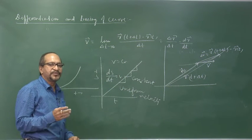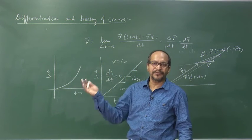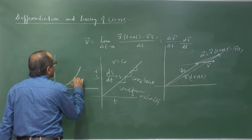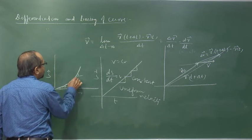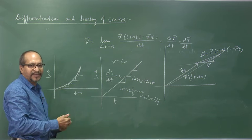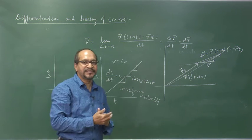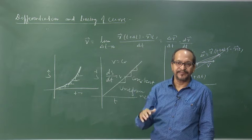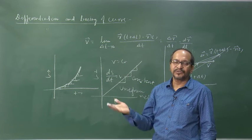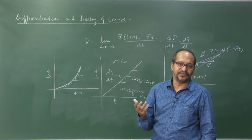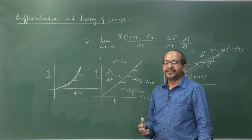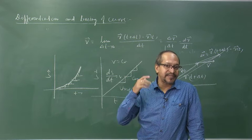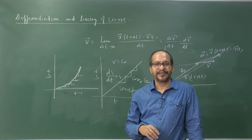If velocity is changing, the slope of the displacement-time graph also changes. Here theta increases, meaning the slope is increasing, and when the slope increases it means the velocity is increasing. So if the first derivative is increasing — greater than 0 — the function is monotonically increasing.